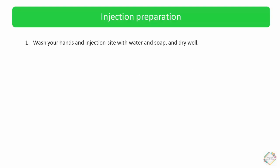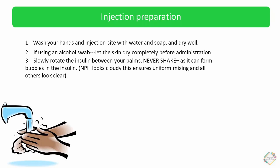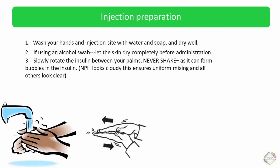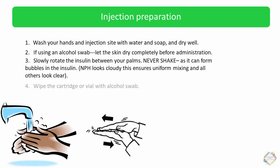For injection preparation, first wash your hands and the injection site with water and soap, and dry well. If using an alcohol swab, let the skin dry completely before administration. The next step involves slow rotation of the insulin cartridge or vial between your palms. Never shake it, as it can form bubbles. This rotation ensures uniform mixing of the insulin.